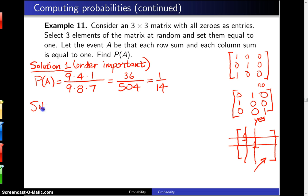The second solution assumes that order is not important. Now we're going to do order not being important in the denominator and so we have to reflect that in the numerator. So P of A in this case is 9 choose 3. Of the nine positions in the matrix, we're going to choose three of them and assume that the order is not important.